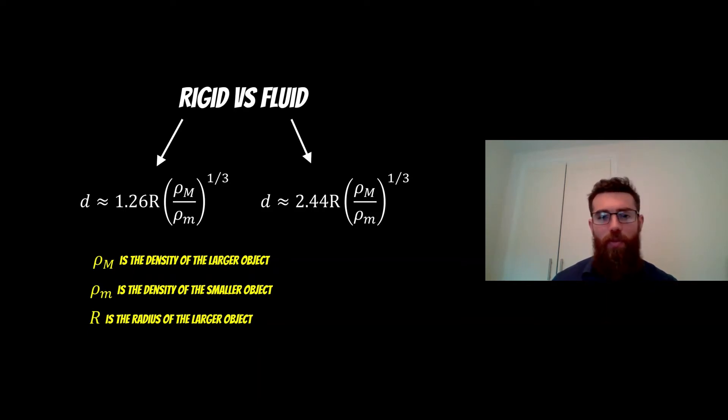In both of them there's three variables really. The first one is the density of the larger object, the density of the planet. You then have the density of the smaller object, the satellite or the moon, and then you have the radius of the larger object, which is the planet in this case.